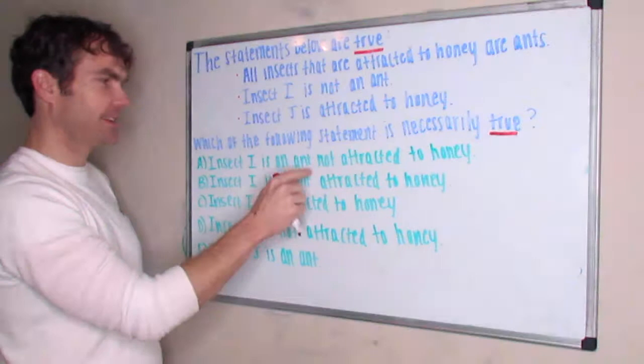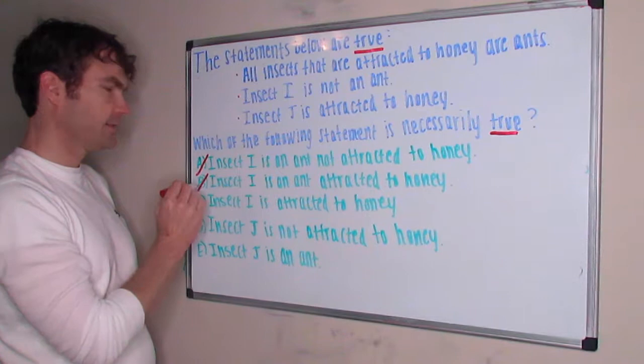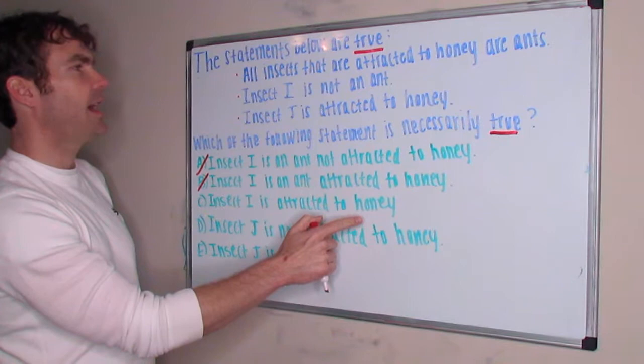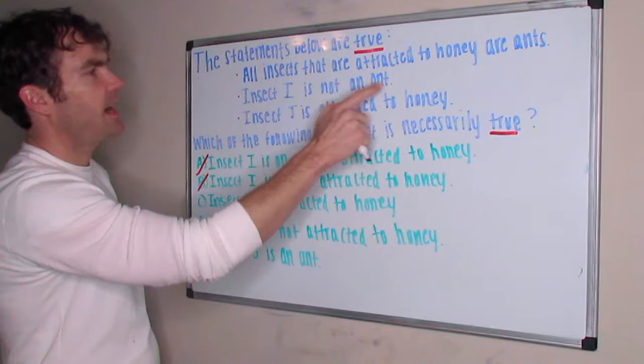Insect I is attracted to honey—do we know that? We know all insects that are attracted to honey are ants. Insect I is not an ant, so we don't know this for sure.